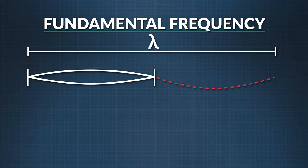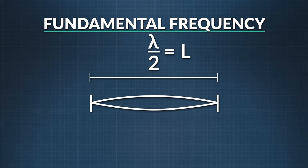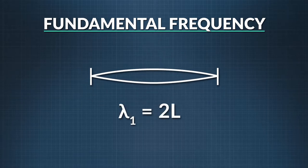Remember, a wavelength consists of one complete crest and one complete trough. There is one half of a wavelength present within this given length of string, L. So mathematically, the wavelength equals two times the length of the string, L.